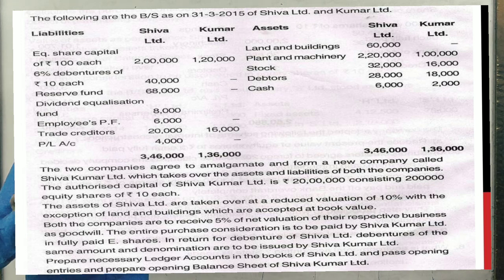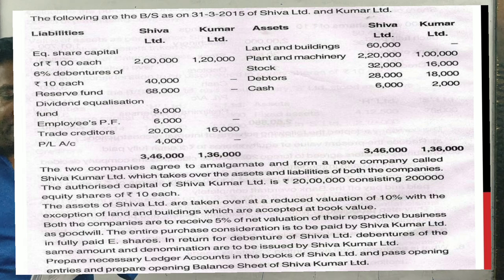The two companies agreed to amalgamate and form a new company called Shiva Kumar Limited, which takes over the assets and liabilities of both companies. The authorized capital of Shiva Kumar Limited is 20 lakhs, consisting of 2 lakh equity shares of 10 each.